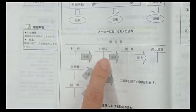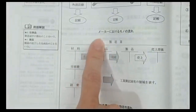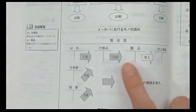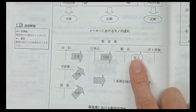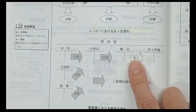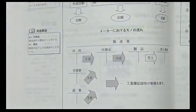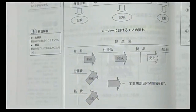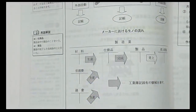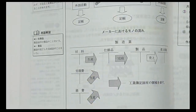工業簿記には商業簿記では登場しない勘定科目があります。材料勘定、労務費勘定、経費勘定、仕掛品勘定、製品勘定などです。これらをしっかり使い分けられるようにするのが今日の目標です。科目はそれほど多くありませんので安心してください。